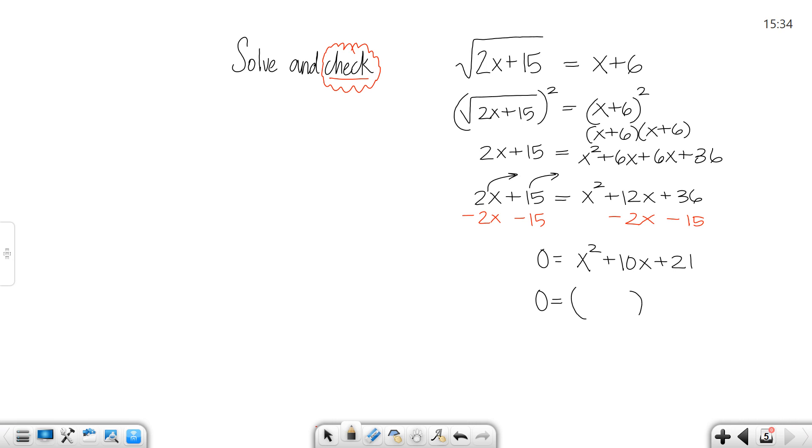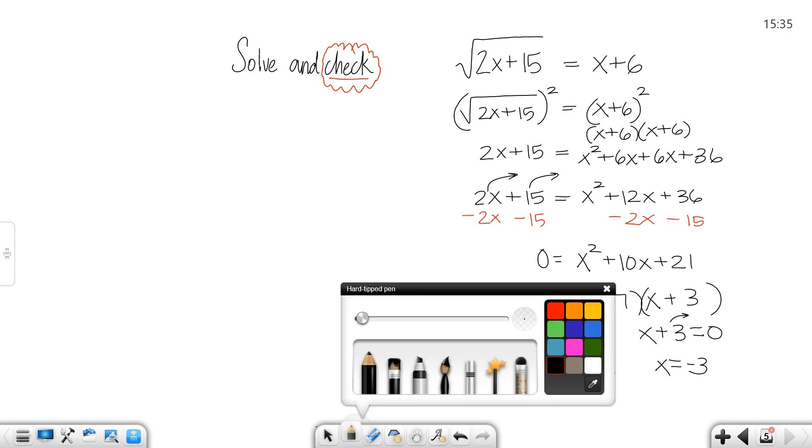So that gives me x squared plus 10x plus 21. When I get ready to factor that one, the factors of 21 that add to give me 10 are 7 and 3. They're the same sign, both positive. I'll set both of those factors equal to 0 and I'll solve them out. When I move the 7 over, I would get that x equals negative 7. When I move the 3 over, I get that x equals negative 3.